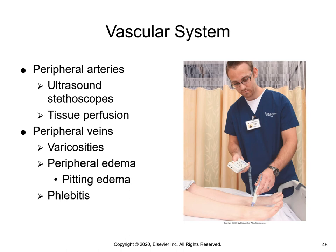If a pulse is difficult to palpate, the nurse can use an ultrasound stethoscope, also known as a Doppler, to amplify the sounds of the pulse wave. Factors that may weaken a pulse or make palpation difficult include obesity, a reduction in stroke volume of the heart, diminished blood volume, or arterial obstruction. This image is the ultrasound stethoscope or Doppler in position for the dorsalis pedis artery.